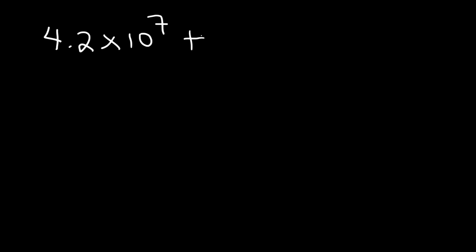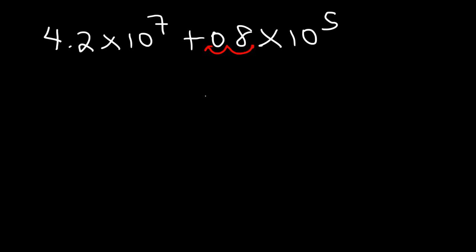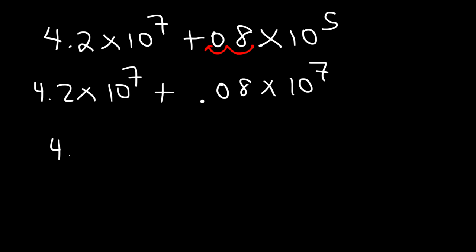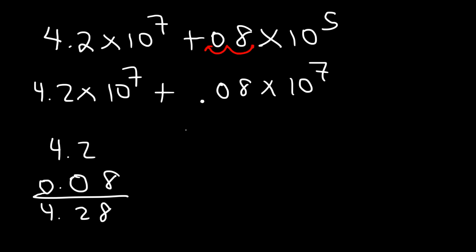Now try this one: 4.2 times 10 to the 7 plus 8 times 10 to the 5. I'm going to move the decimal two units to the left so the exponent increases by 2, making 8 become 0.08 times 10 to the 7. Now I can add: 4.2 plus 0.08 equals 4.28, so the answer is 4.28 times 10 to the 7.